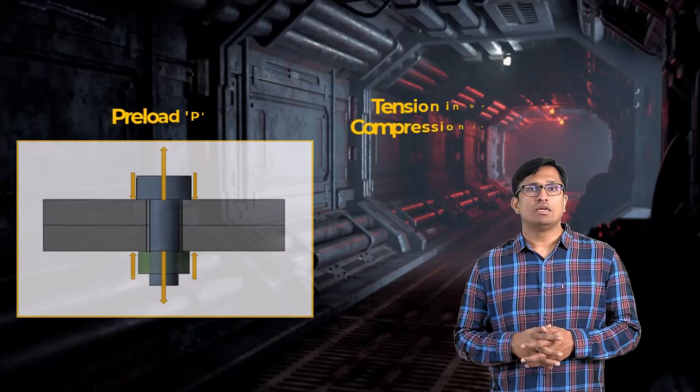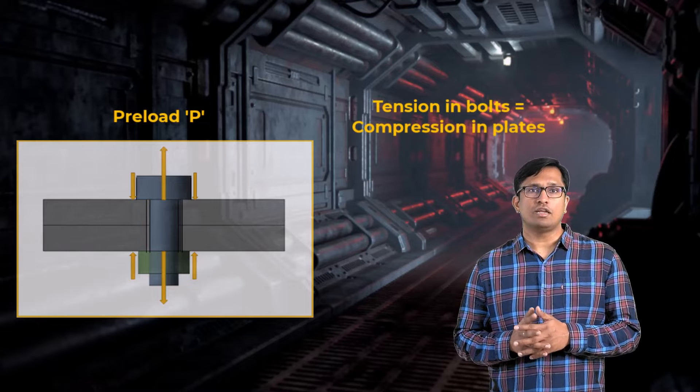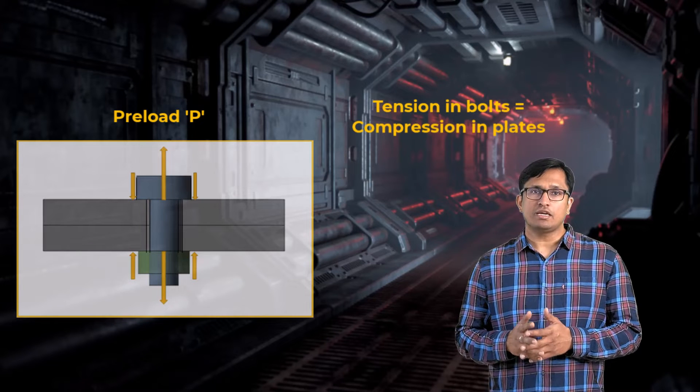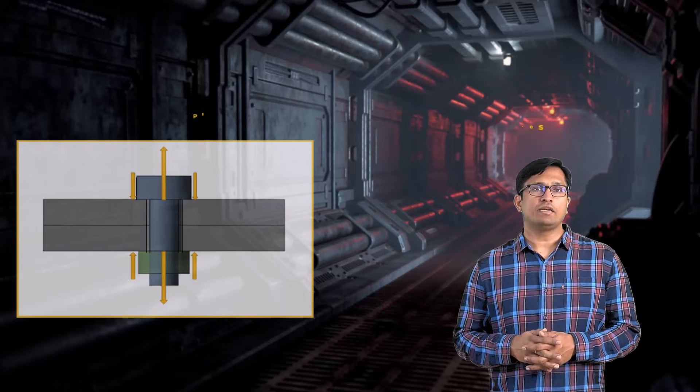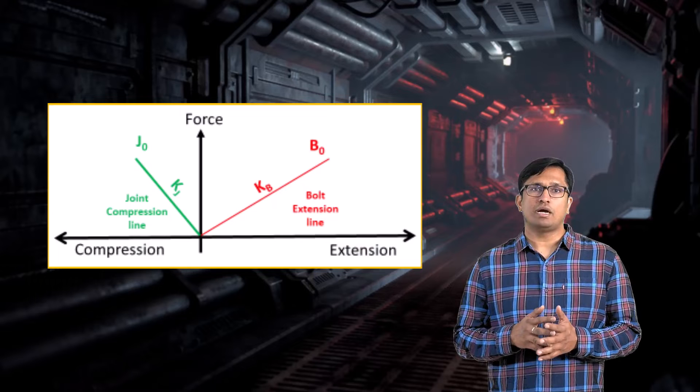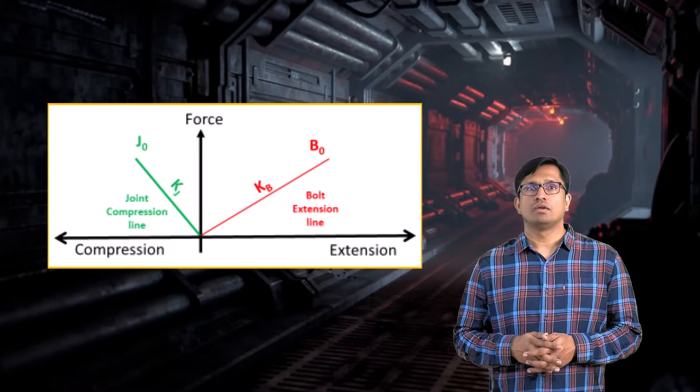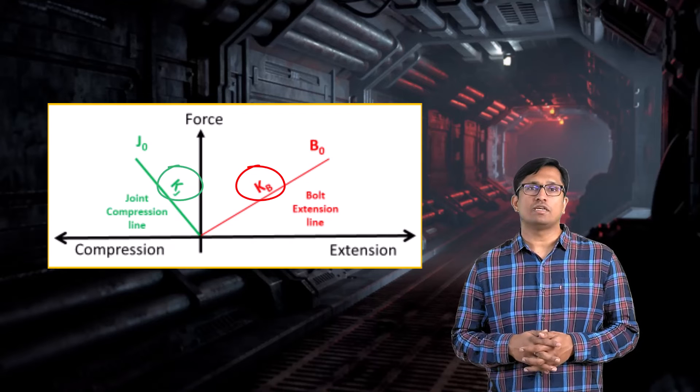Under a given preload, the tension in the bolt must equal the compressive force in the clamped members for static equilibrium to exist. Once the bolt preload is applied, the force displacement diagram for the bolt and the clamped parts is shown here. The slopes of the two lines represent their respective stiffnesses.